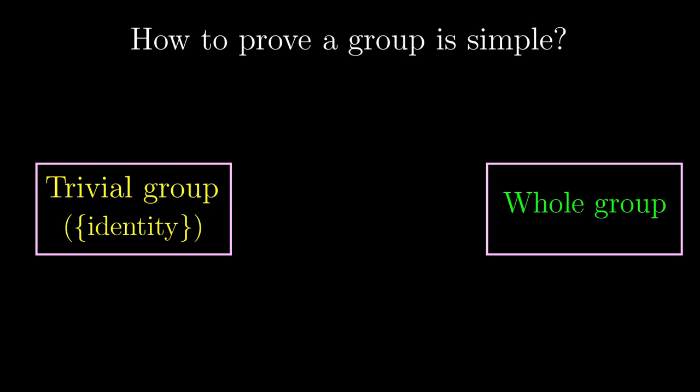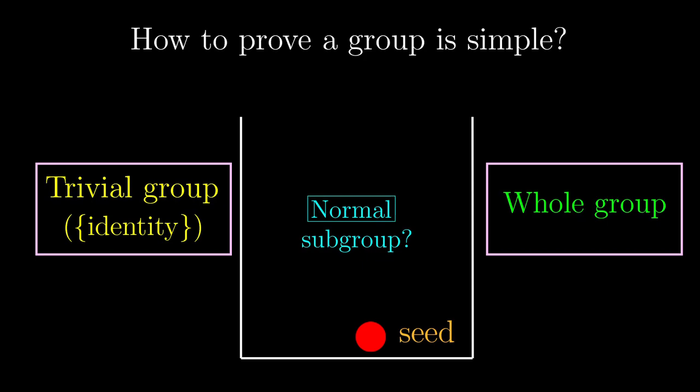But how do we know a group is simple? Do we just list all the normal subgroups? Well, sort of. We create a box, and we want to chuck in some symmetries. We chuck in the first symmetry, and let's call it a seed symmetry. We need to ask ourselves, is this a normal subgroup?